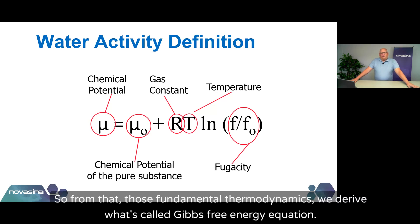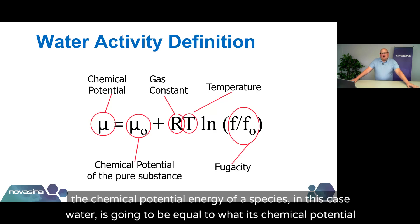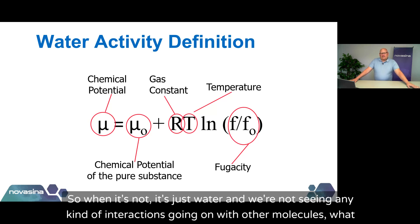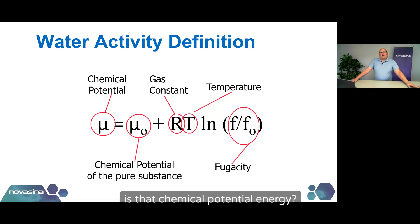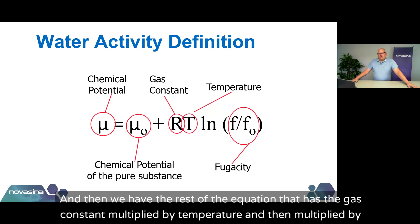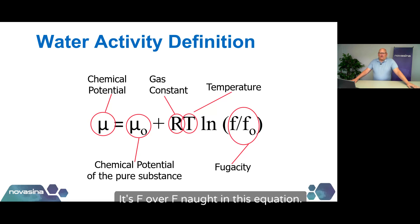In this case we're talking about water. From those fundamental thermodynamics, we derive what's called the Gibbs free energy equation. In this equation, the chemical potential energy of a species — in this case water — equals what its chemical potential energy is of the pure substance, plus the gas constant multiplied by temperature, multiplied by the natural log of what we're calling fugacity, or relative fugacity — the F over F-naught in this equation. The chemical potential energy of the pure substance is a constant specific to the species. The gas constant is also constant, and if we control temperature, that becomes constant too.